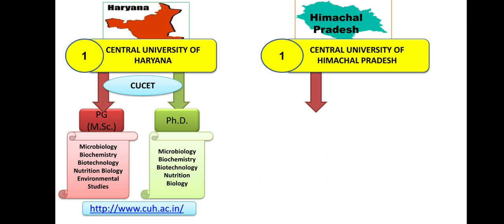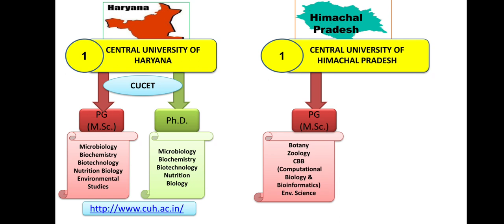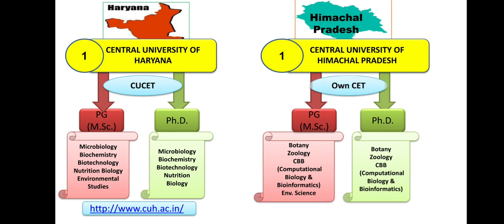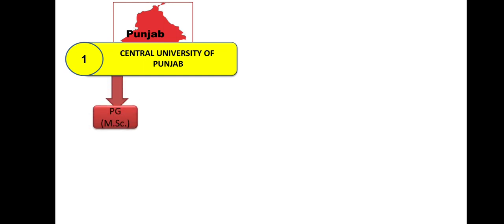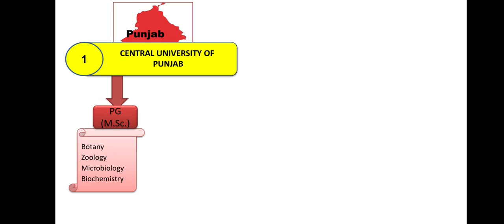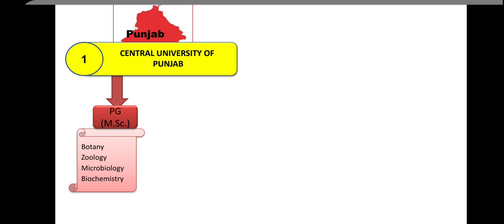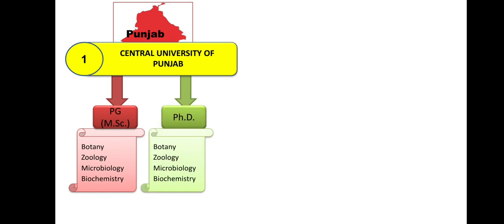Himachal Pradesh Central University: MSc courses are available in Botany, Zoology, Computational Biology, and Bioinformatics — an Applied Biological Science subject, not commonly available in all universities. MSc in Environmental Science is also available. PhD is available in Botany, Zoology, Computational Biology, and Bioinformatics. Admission is through their own entrance examination. Then Punjab Central University: MSc in Botany, Zoology, Microbiology, and Biochemistry. Where you see only MSc and PhD listed, UG course is not available. PhD is in the same subjects. Admission will be through CUCET.